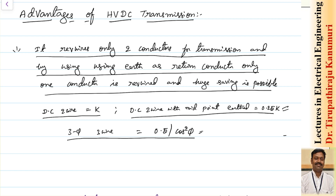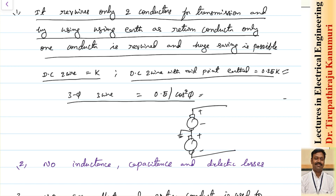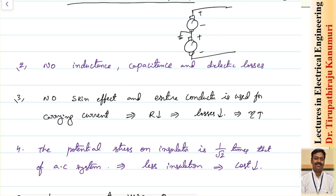Generally the cos φ value is maintained around 0.7 or 0.8, so DC two-wire with midpoint earth gives the best transmission system compared to the AC transmission system. That is why DC is much more beneficial. Practically, HVDC transmission lines are connected in a plus-minus bipolar configuration with the center point connected to ground, so two-wire transmission with center-point earth is used in practice.